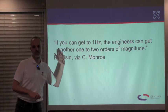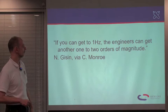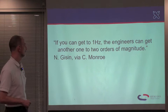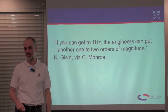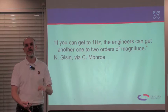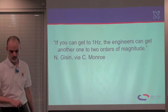Nicholas Gisin, a well-known quantum researcher, was quoted as saying: if you can get to 1 hertz, the engineers can get you another 1 to 2 orders of magnitude. He said this without, as far as I know, having read some of the papers that I've written, but those are exactly the kinds of numbers we have been getting out of our results — 1 to 2 orders of magnitude improvement in error tolerance and in execution times for algorithms.